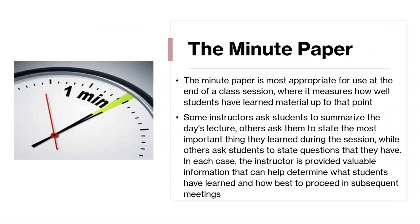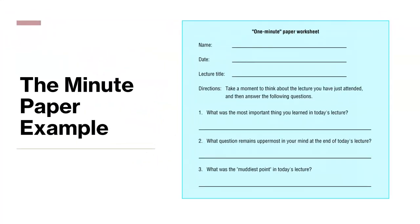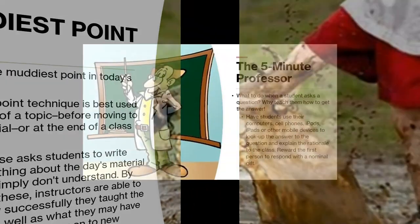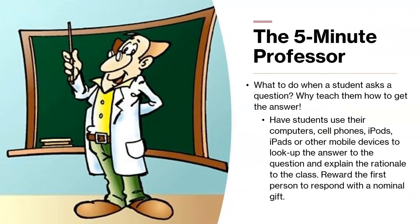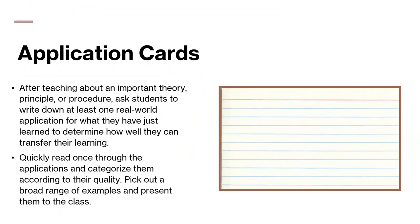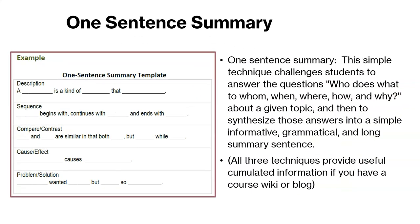An example of a CAT is the minute paper. Another is the muddiest point — in a live session you can use the chat box at the end of class for this. The five-minute professor is where the student asks a question but you have a student answer. Other examples include application cards and the one-sentence summary, which can be done loosely or with a provided format.